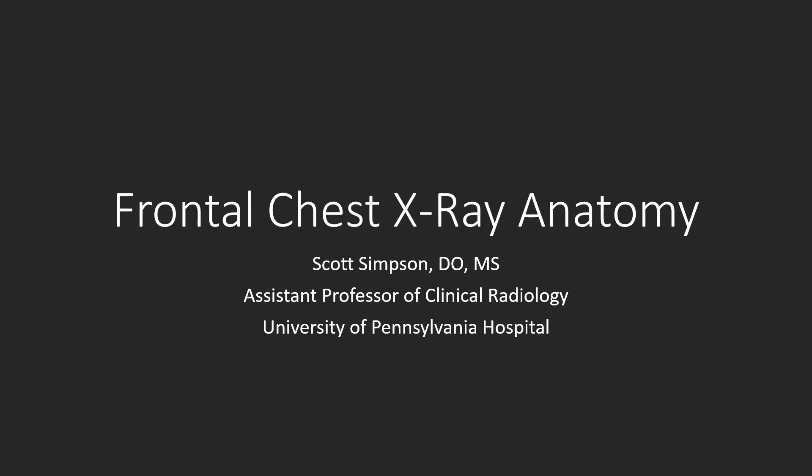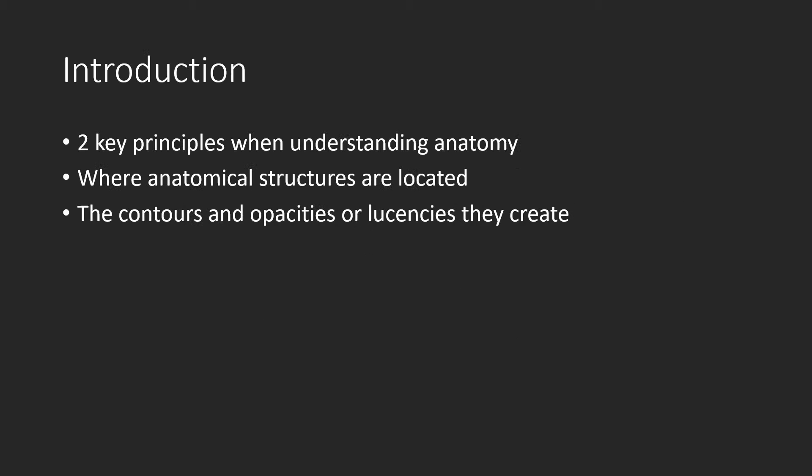My name is Scott Simpson and this lecture will be discussing relevant anatomy on the frontal view of the chest. When discussing radiographic anatomy, there are two key principles we first have to understand. First, where do the normal anatomical structures lie in relation to each other? Second, knowing where they're located, how do they appear in chest x-ray?